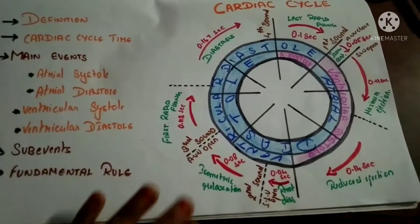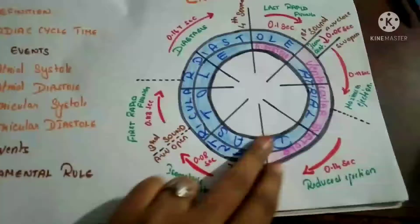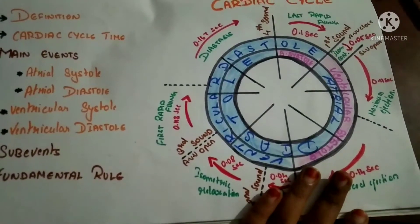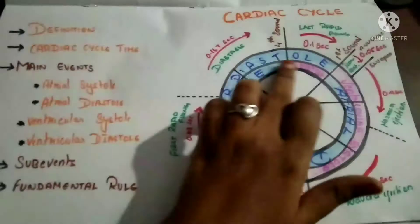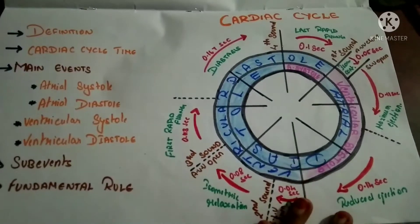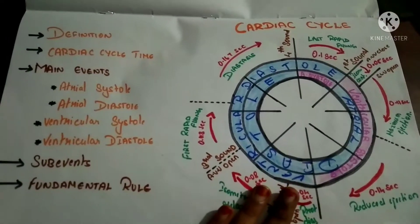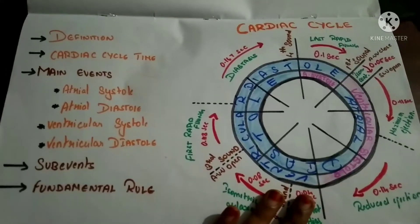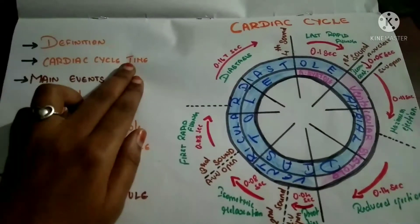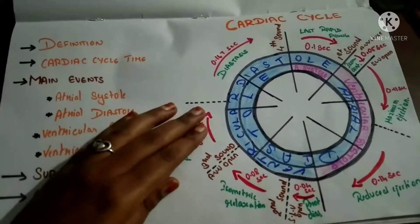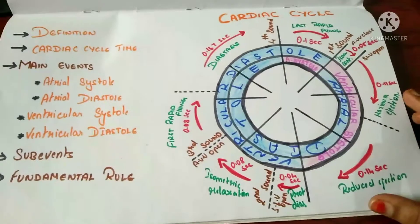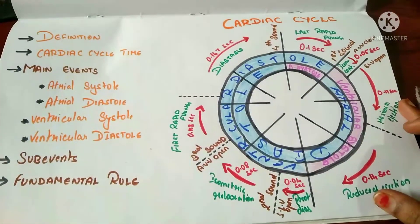The cardiac cycle is defined as the series of events that occur from one heartbeat to the next heartbeat. These events occur during a heartbeat and are repeated again and again — so we can say that the cyclic repetition of events from one beat to another is called the cardiac cycle. The cardiac cycle time is the time required to complete one cardiac cycle, that is, the time required to complete all the events that occur during a beat.